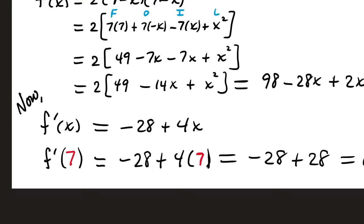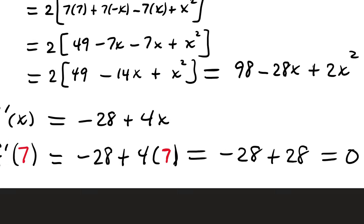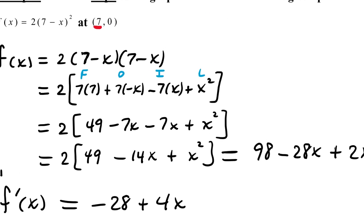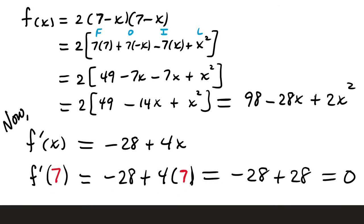Now we can take our first derivative. Remember 98 is a constant, so its derivative is 0. Negative 28x has a derivative of negative 28. And 2x squared has a derivative of 4x. The original problem had the point (7, 0), so we take the x-coordinate and substitute it into our derivative: negative 28 plus 4 times 7, that's negative 28 plus 28, giving us an overall rate of change of 0.